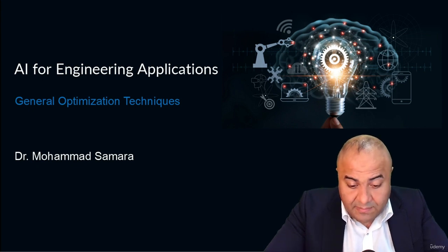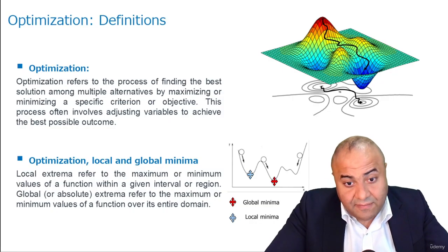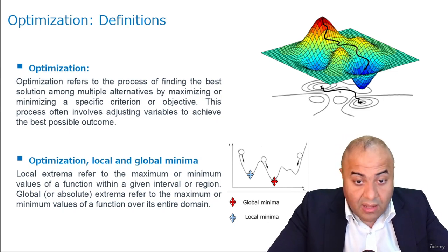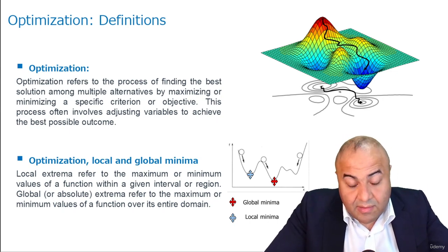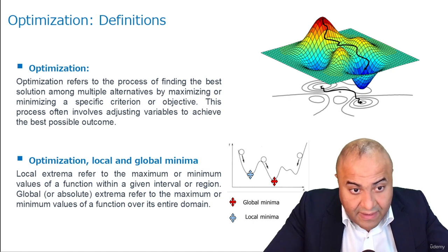What is optimization? Optimization is simply finding the best solution among other alternatives by minimizing or maximizing a specific value.